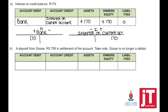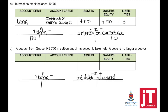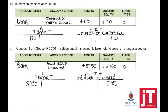Adjustment B — a deposit from Goers of 5,750 in settlement of his account. Take note: Goers is no longer a debtor. This means that the business received money. Why did the business receive money? He is no longer a debtor — it means that we've written his account off as bad debt. So when we recover that money, it must be shown as bad debts recovered. Account debited: bank. Account credited: bad debts recovered. Effect on the accounting equation: assets plus; because my income increases, it will have a positive effect on the owner's equity.